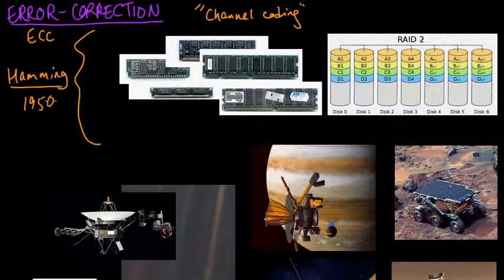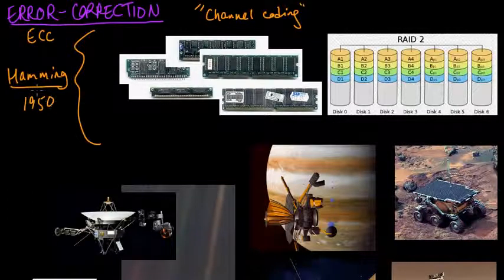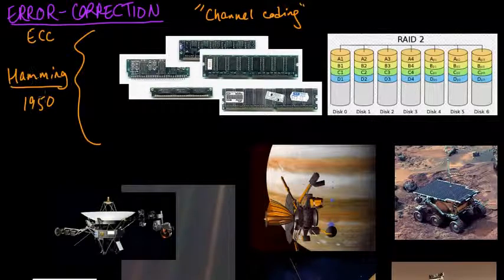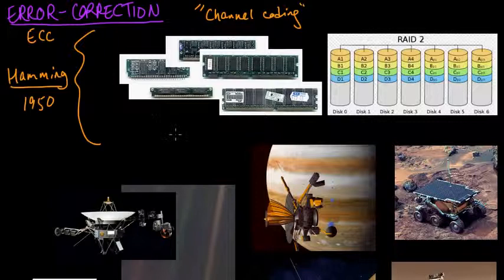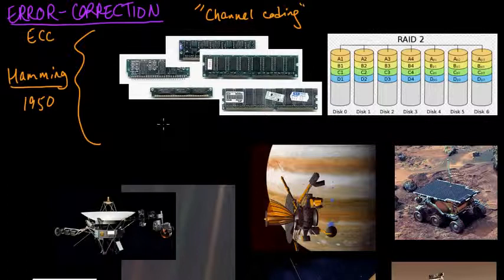These ECC codes were sort of the first reasonably good error correction codes. Not too long after that they were the state of the art for a while, but people came up with better techniques and now there exist way better techniques than Hamming codes. They are still used for certain applications — one application of Hamming codes in use today is in RAM.